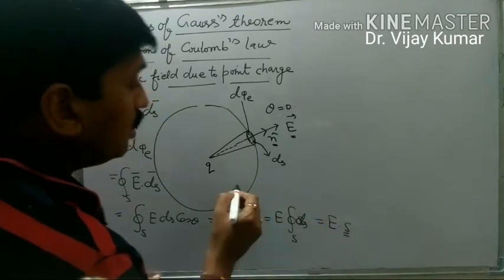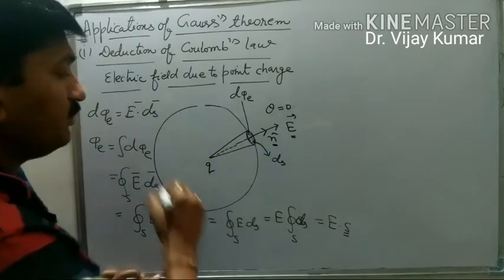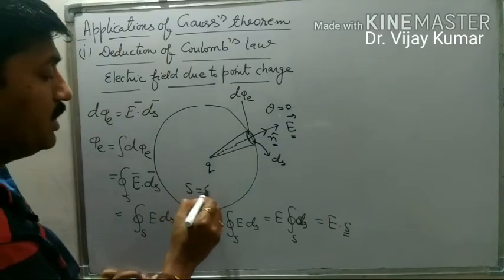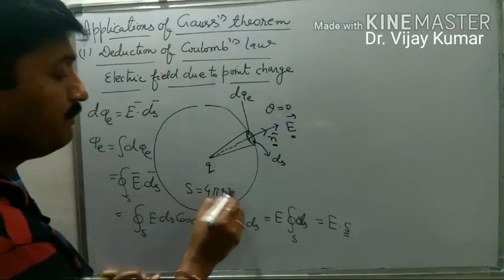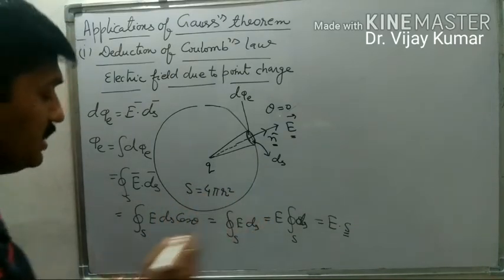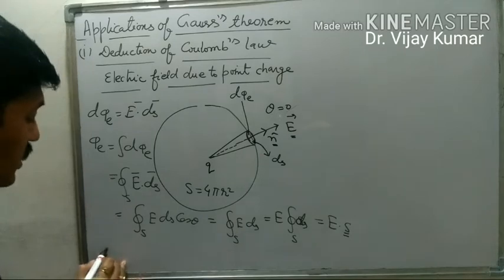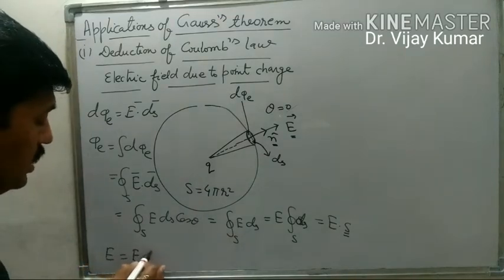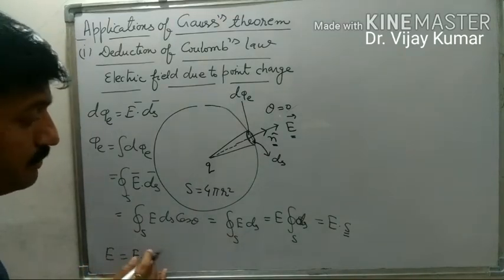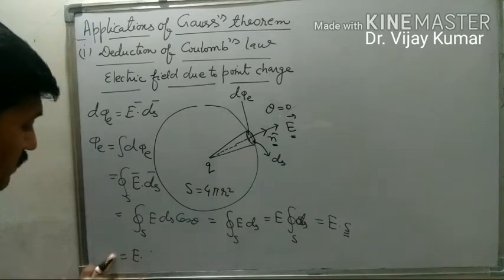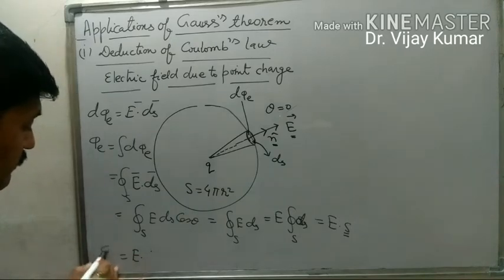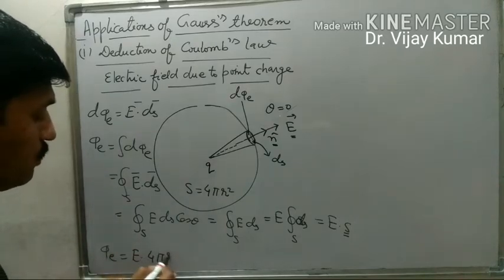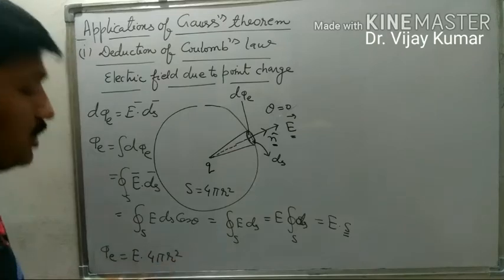Since E is constant, it becomes E times the surface integration of ds, which equals E into S — where S is the surface area of this sphere. We know that the surface area of this sphere is 4 pi r square, so phi e equals E into 4 pi r square.